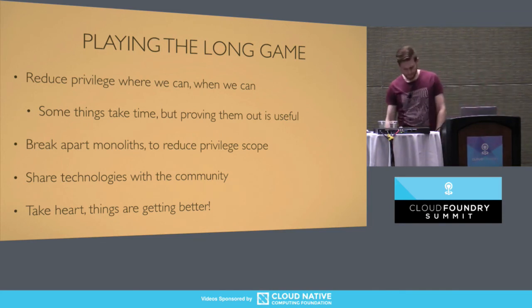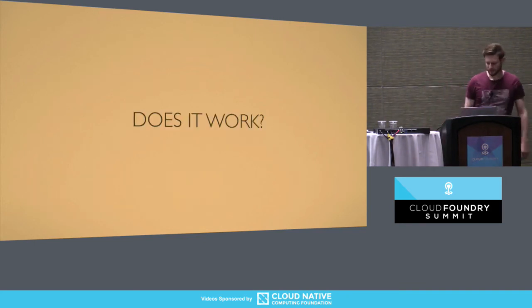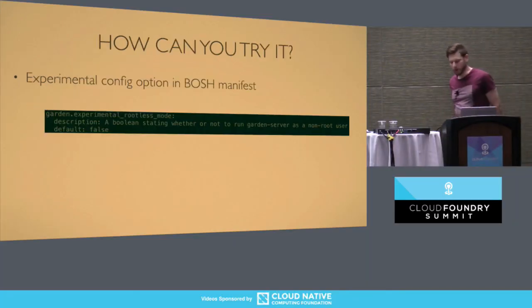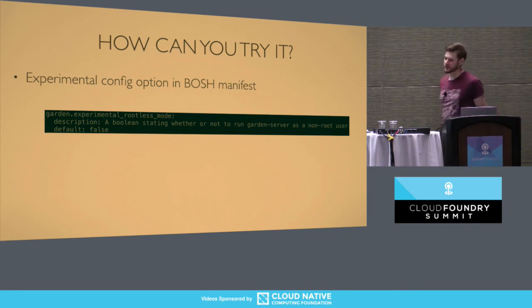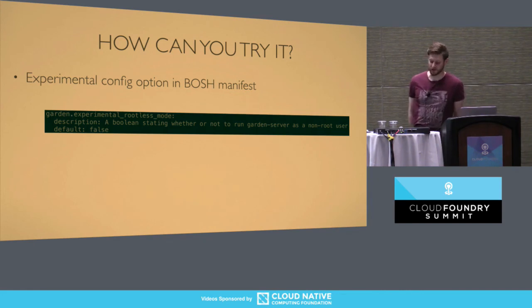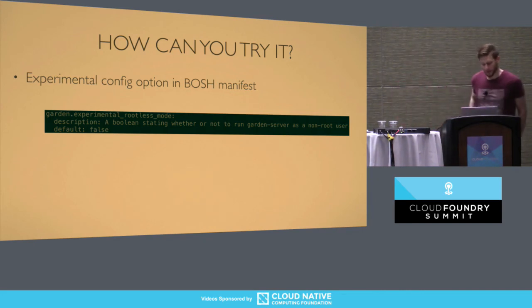Take heart, because things are getting better. So does it work? I wish I could say yes, it definitely works, but all I can say right now is hopefully. It does pass Cloud Foundry acceptance tests in the default deployment, and that's great. Hopefully it's going to go out on Pivotal Web Services soon, so it will get some real production traffic. How can you try it? Bosh is the way we deploy Cloud Foundry and Garden. There is a flag you can set — experimental rootless mode — and that's the only thing you need to change. We also have a standalone binary for playing about with that you can get on GitHub. We've stood that up on an Ubuntu virtual machine and run Garden as the Ubuntu user, and it worked fine. So I'm optimistic.